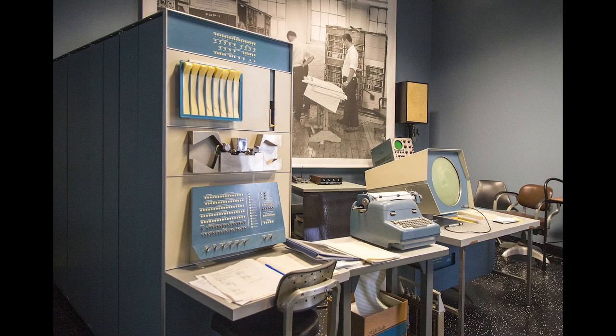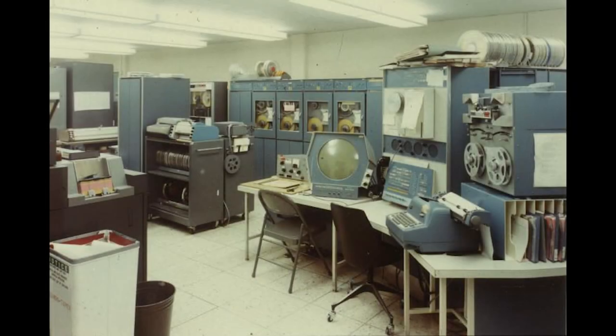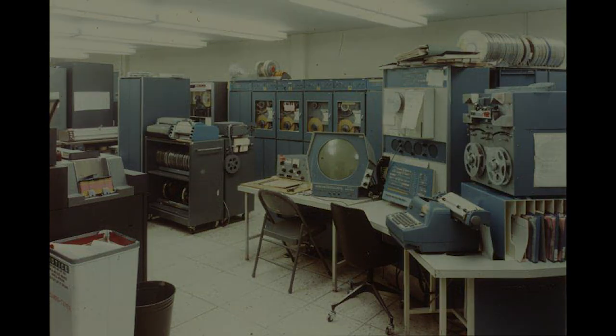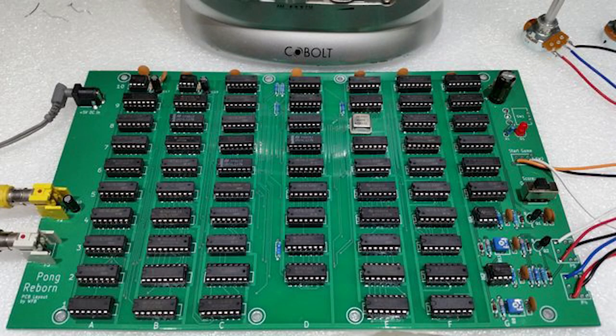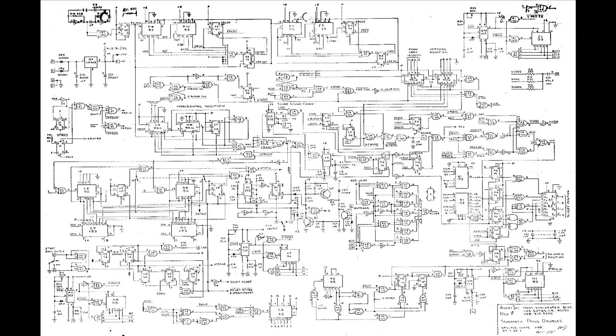Space War ran on a PDP-1 computer, which was a pretty powerful machine at the time, but there were only about 50 of them in existence, so not many people ever got to play this game. As technology advanced and electronics became less expensive, the first public games started to appear in the early 1970s. But these games tended to use purpose-built circuits using discrete logic chips rather than actual microprocessors, so they'd be built from individual NAND and AND gates and so on. They were very much seen as novelty products and didn't have the mass appeal that we see today.